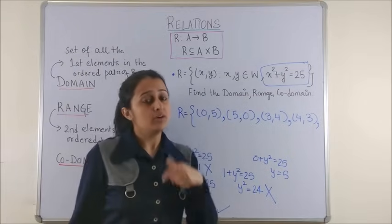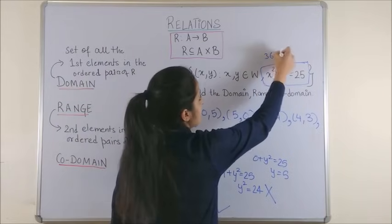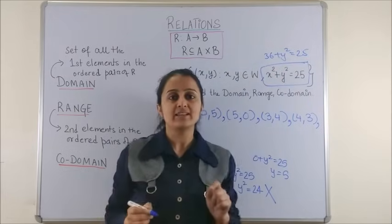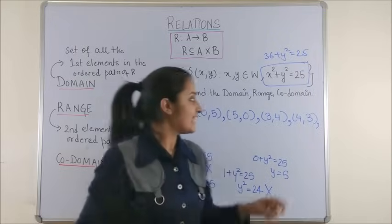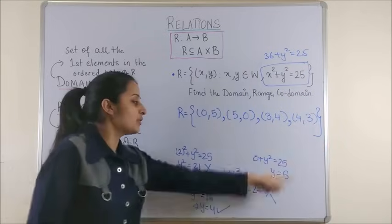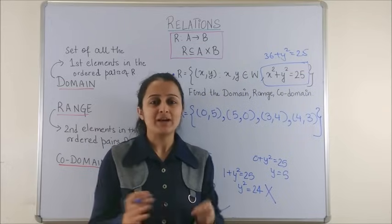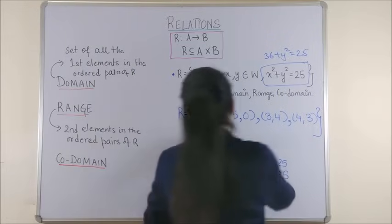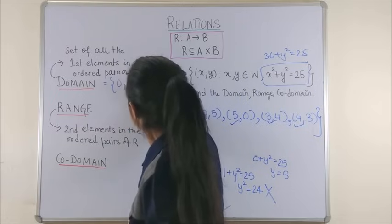Moving further, 5 would be paired with 0. Now, talking of your 6, so 6 square, which is already 36 plus Y square equal to 25, that means Y square becomes minus 11. That cannot give you a whole number for sure. So, that means we will have to end our set over here. Please note, all these calculations are only for your understanding. If you are very good at mental math, you do not need to do all this. This is the desired answer. So, from here, the first elements become the domain, which are 0, 3, 4 and 5.